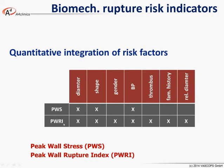The peak wall rupture risk index, however, integrates even more risk factors. Apart from diameter, shape, and blood pressure, it also integrates the gender effect — females have about an 11% less strong aneurysm wall, and this is accounted for by this work. Similarly, if you have a thick thrombus layer, it's known that the wall underneath is weaker due to hypoxia and neovascularization, and this is also integrated. Family history and relative diameter expansion — it's known that a large aneurysm has a weaker wall — are also integrated by this parameter.